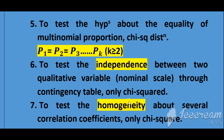Another use: to test the homogeneity of several correlation coefficients, we use only chi-square distribution. If you have different populations and you want to see whether their correlation coefficients are equal or not — whether they are homogeneous or heterogeneous — to check and observe this homogeneity, you will use chi-square distribution to perform this test.